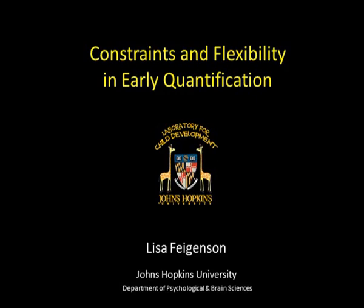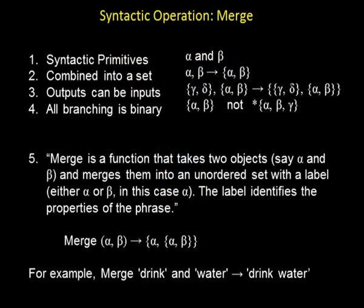I'll be telling you about work my lab has been doing on object representations. The claim is simple: humans tend to represent the world in terms of objects. We can think about those objects atomically, but we can also bind them in hierarchical fashion, which has benefits for how we organize working memory. This tendency is true throughout the lifespan. All the data I'll present today come from babies, but I think it's reflective of human cognition generally. I'm hoping the data will inspire us to think about whether these computations have anything to do with the unbounded merge operation we've been discussing.